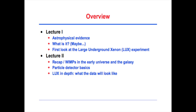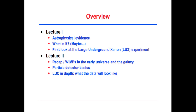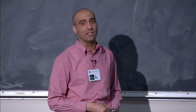This is different from the overview last week. The first part is the same, but as we were writing lecture two, we rearranged things a little bit. Last week we told you about astrophysical evidence, what dark matter might be, and a first look at the LUX experiment. Tonight we'll start with a short recap, then talk about how WIMPs may have been produced in the early universe and what the basic parameters are for a WIMP search today — that is, WIMPs in the galaxy. Then we'll tell you about particle detector basics, the key particles of interest to someone searching for dark matter and how they interact in the detector, and then what LUX in depth looks like — the data we're going to take.